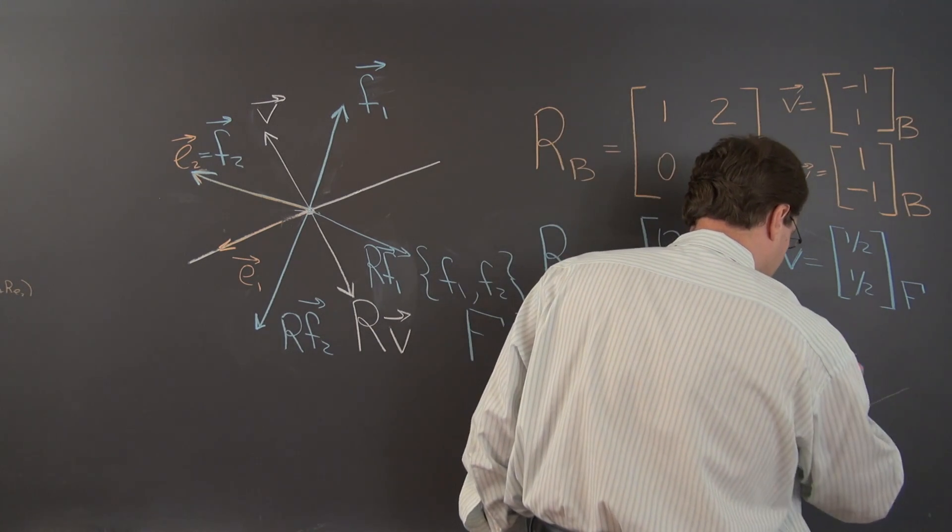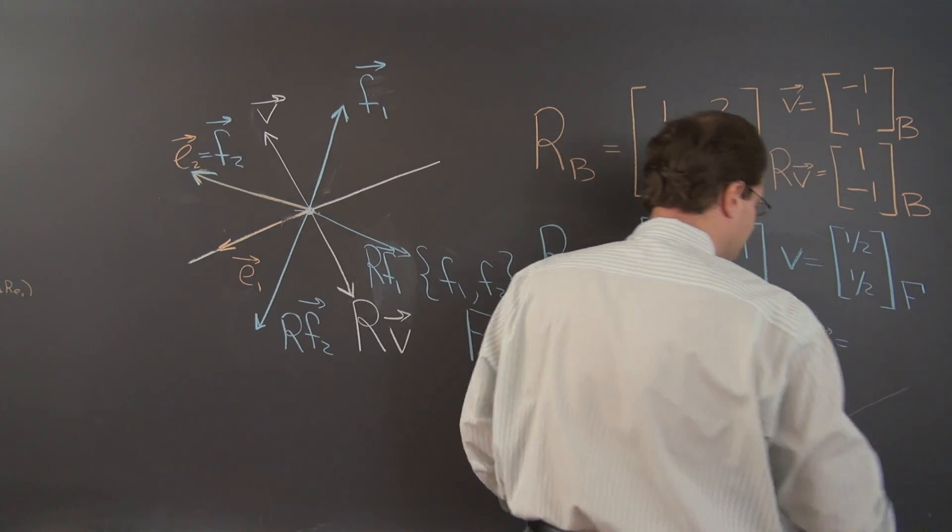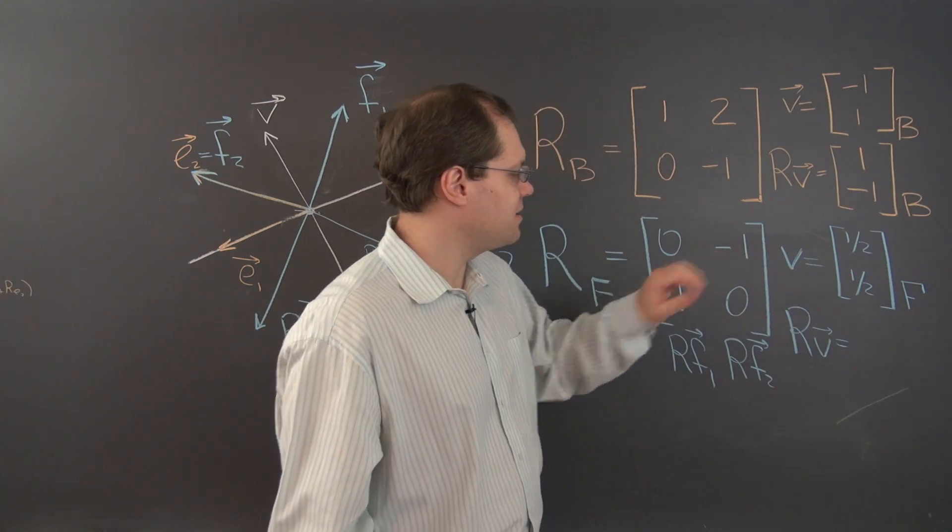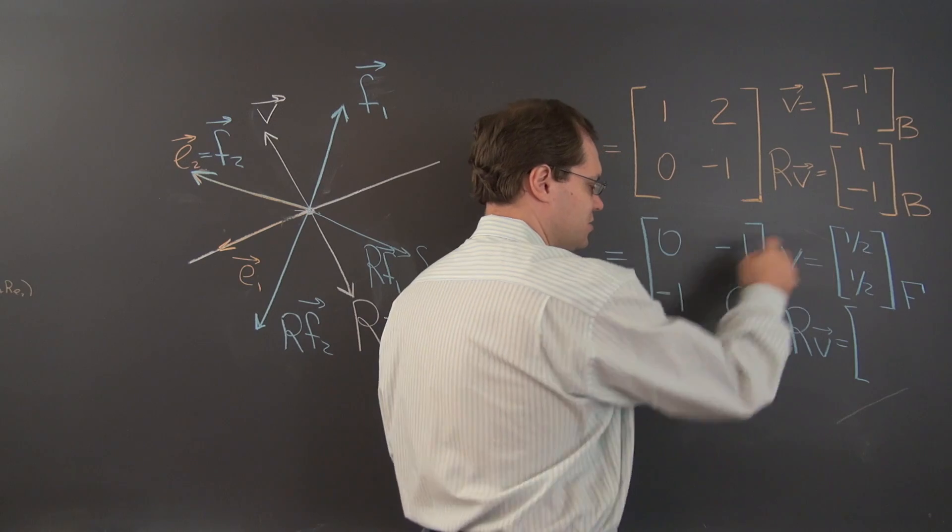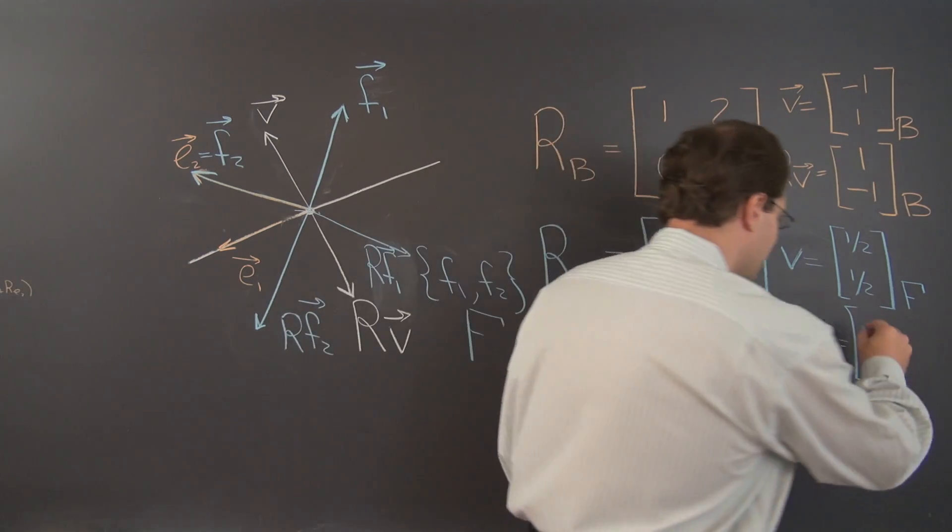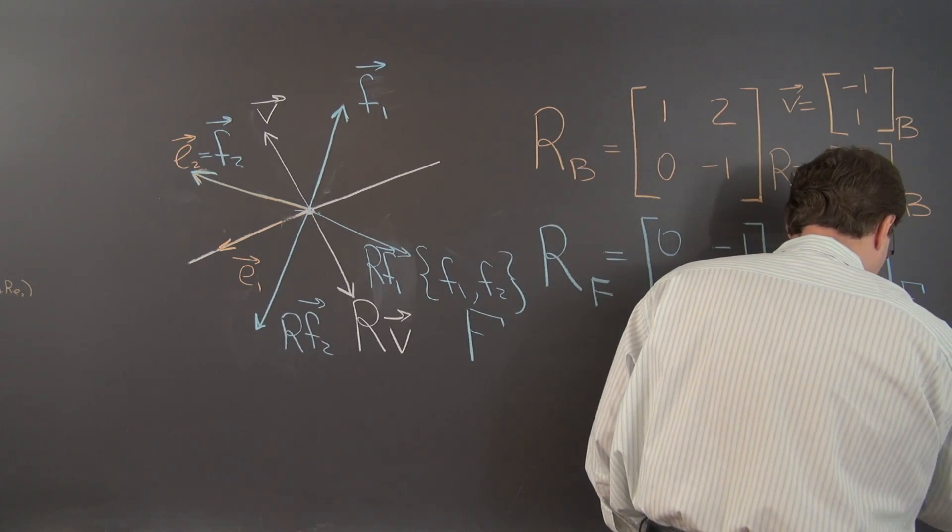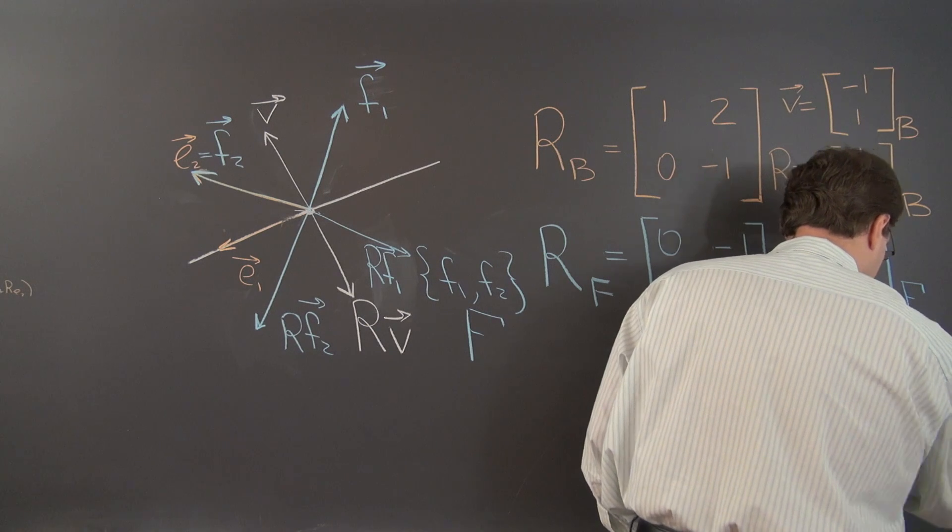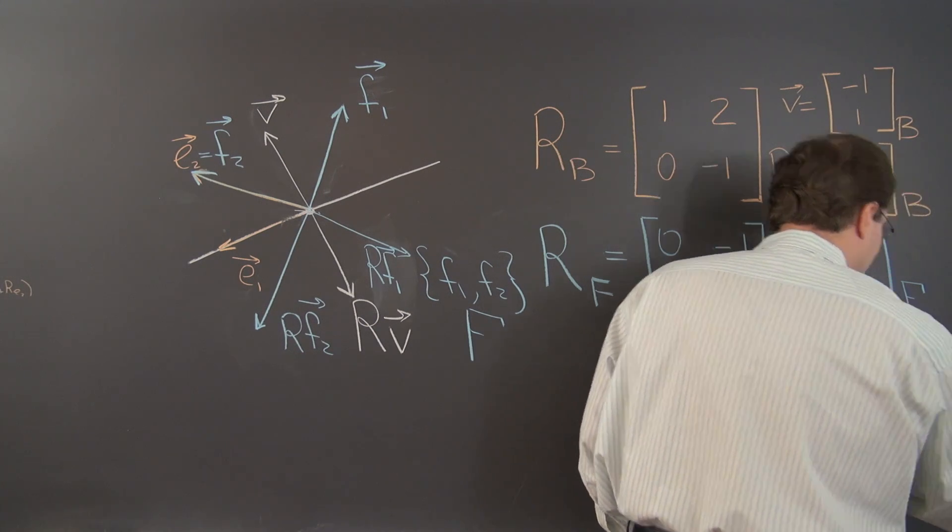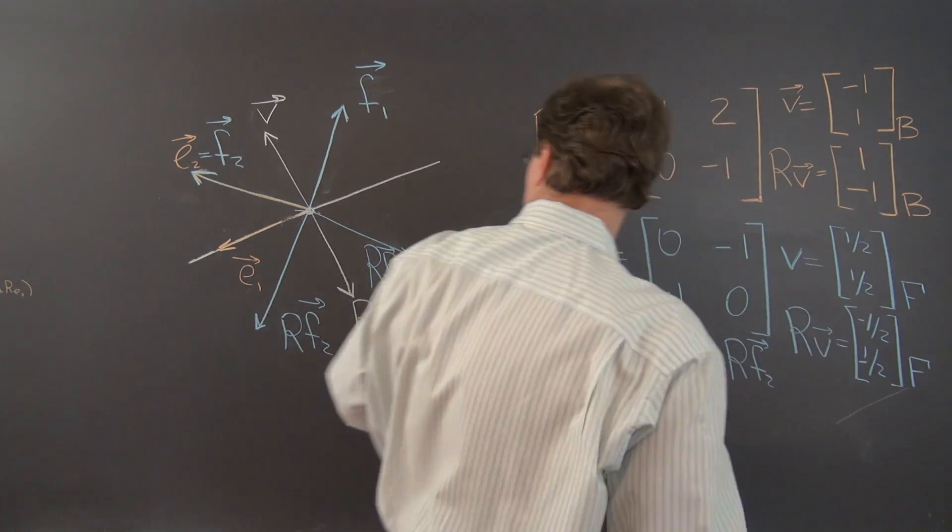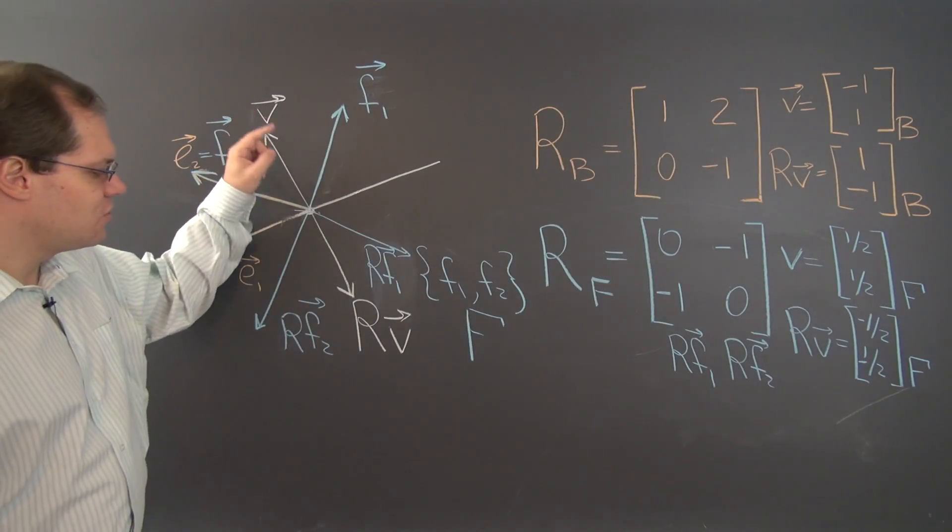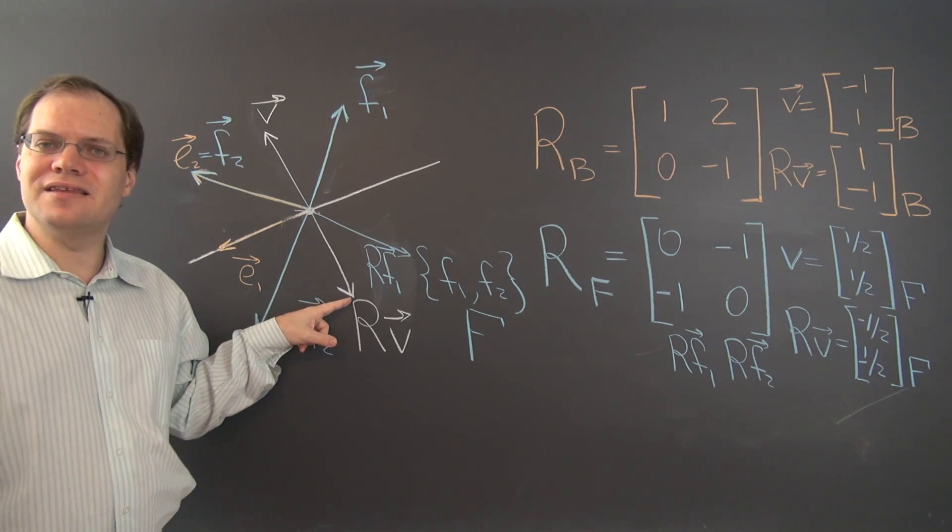And of course r of v is obtained by multiplying this vector by this matrix, and of course the answer is, you can do this multiplication rather easily, minus a half, minus a half. And now this vector, minus a half, minus a half, in this new basis, once again results in this very vector.